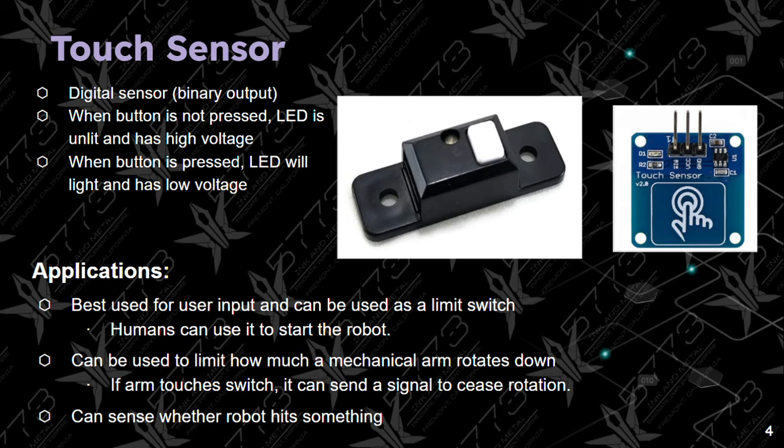It is best used for user input. Humans can use it to start the robot. It could also be used to limit how much a mechanical arm rotates down — if the arm touches the switch, it can send a signal to cease rotation. It can also sense whether a robot hits something.